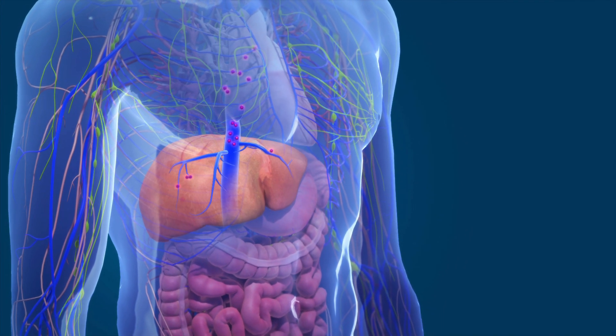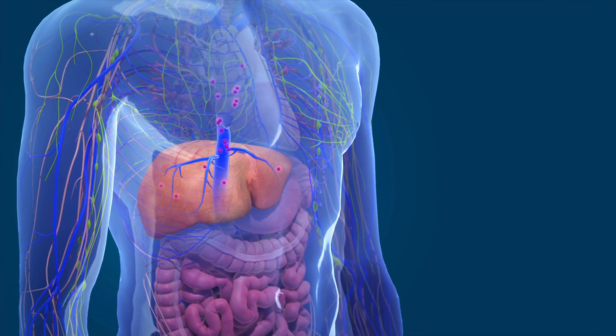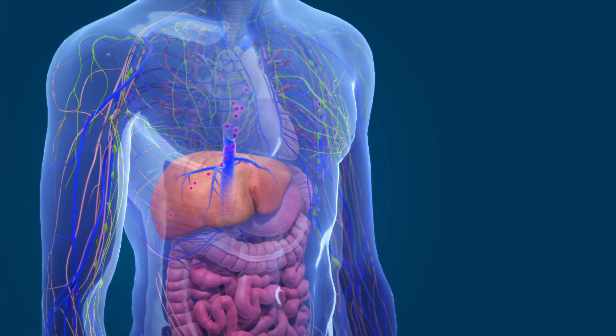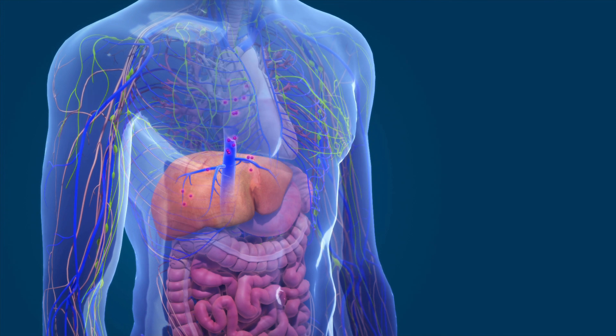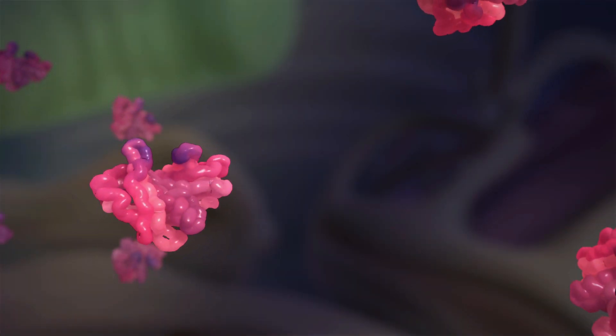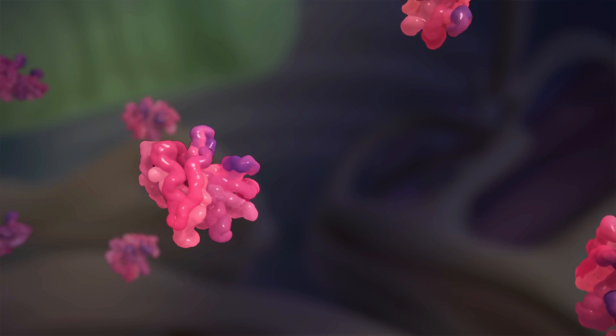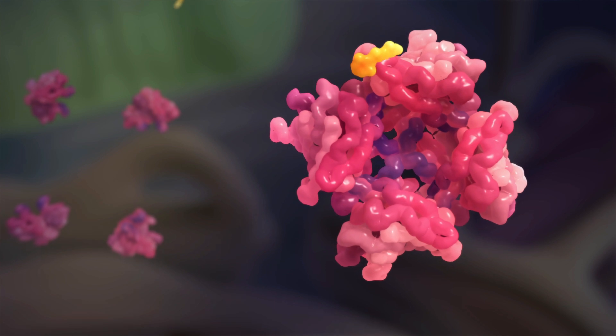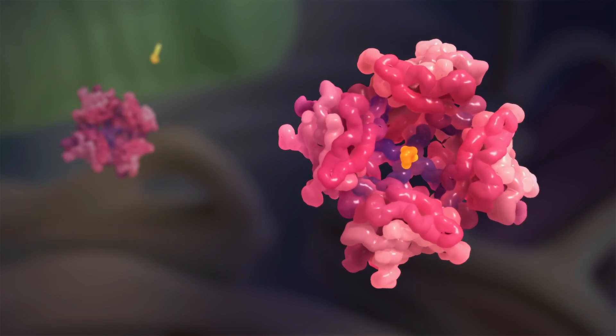TTR is mostly made in the liver. Once released into the bloodstream, its role is to transport vitamin A and the hormone thyroxine around the body. In order to do so, four individual TTR proteins must be attached to each other to form a four-unit complex before it can carry vitamin A or thyroxine.